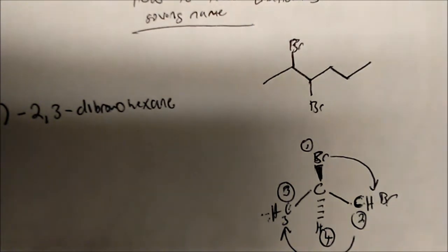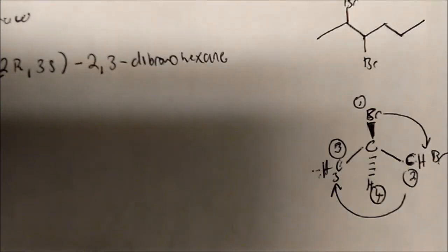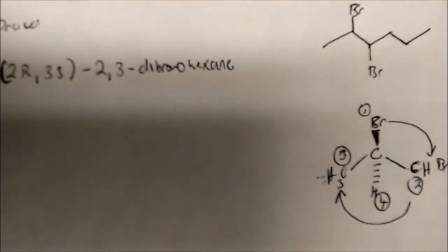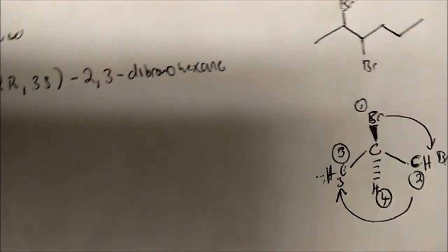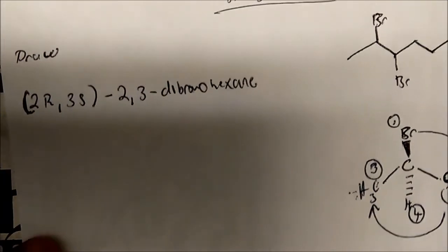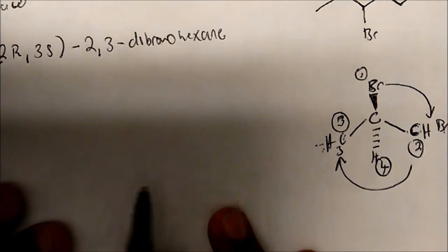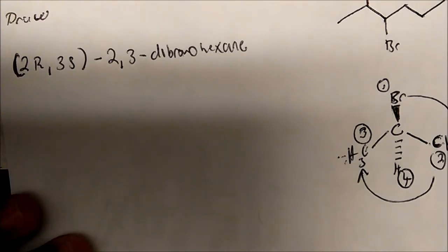The good thing is that your hydrogen is already going away from you, so this will give you right to the answer. So my bromine is going one, two, three, and then to four. So this is going R. So in this case we got lucky — bromine is going exactly away from us, so this will be your R.